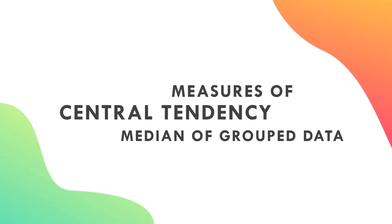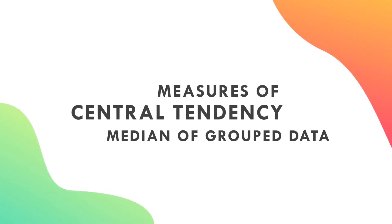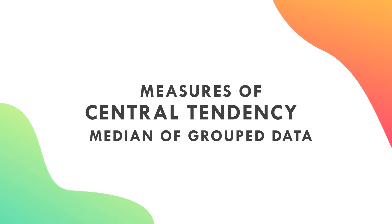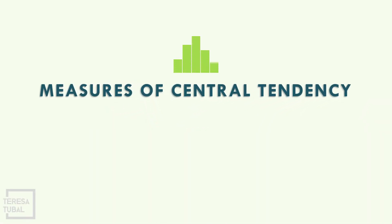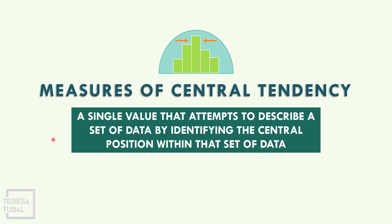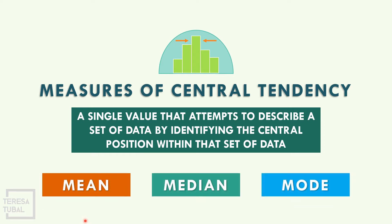Our lesson is about measures of central tendency — median of grouped data. Measures of central tendency refers to a single value that attempts to describe a set of data by identifying the central position within that set of data. The measures of central tendency are mean, median, and mode. Last time we discussed the mean of grouped data. Right now, we will discuss the median of grouped data.